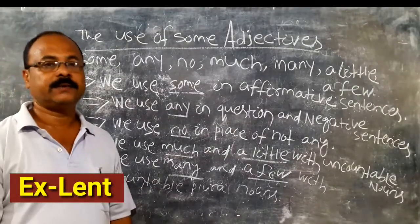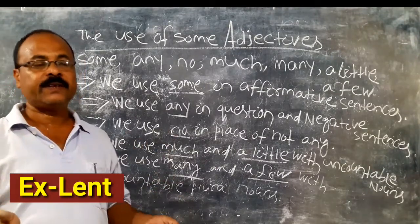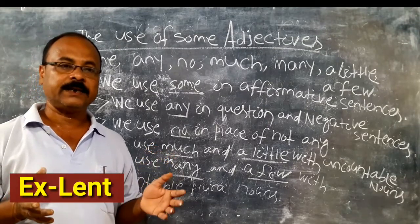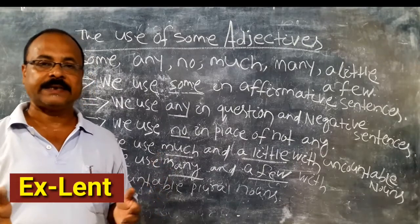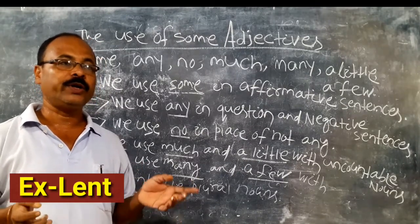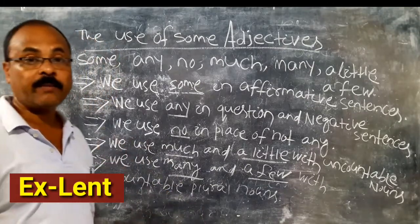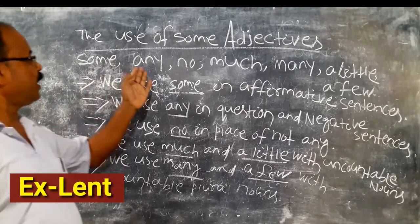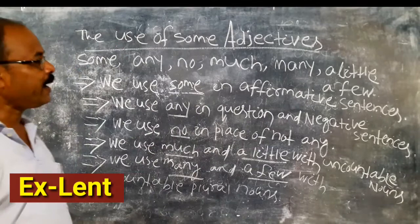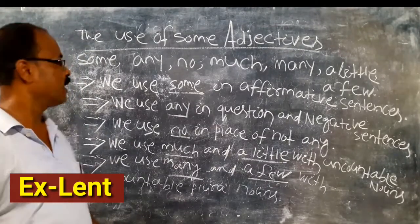Now let us discuss the use of some adjectives — in which place and case different adjectives can be used. Different adjectives are used in different places. There are certain rules, and by following these rules we use the different adjectives. Let us discuss: some, any, no, much, many, a little, a few — where they can be used.